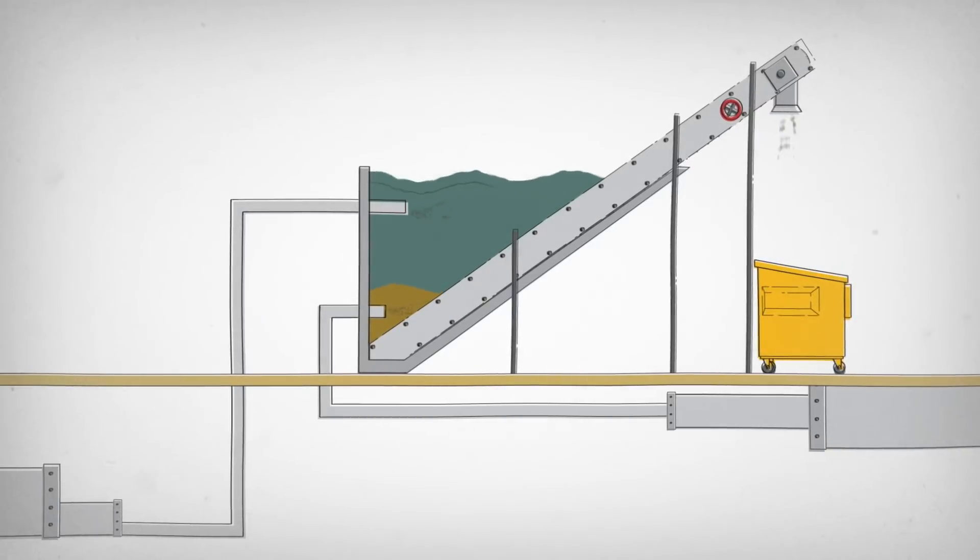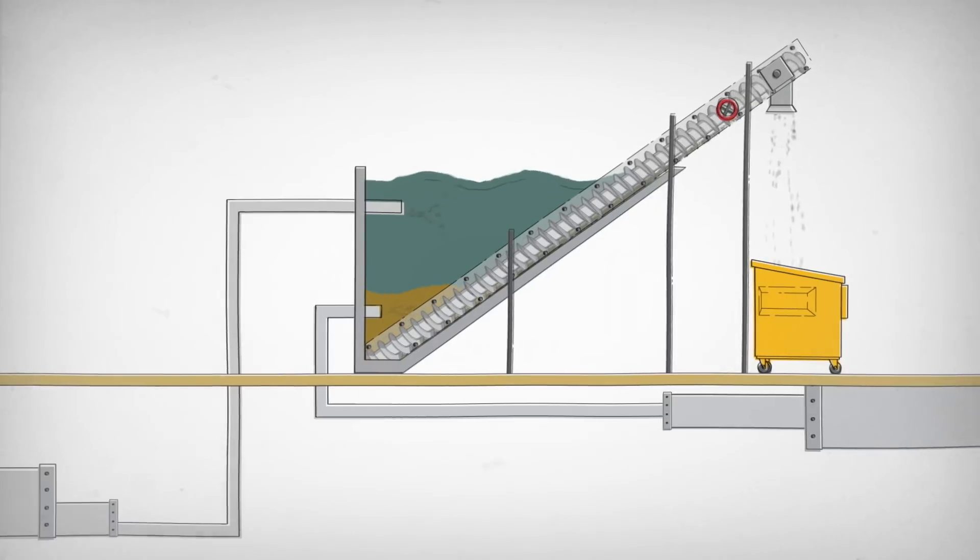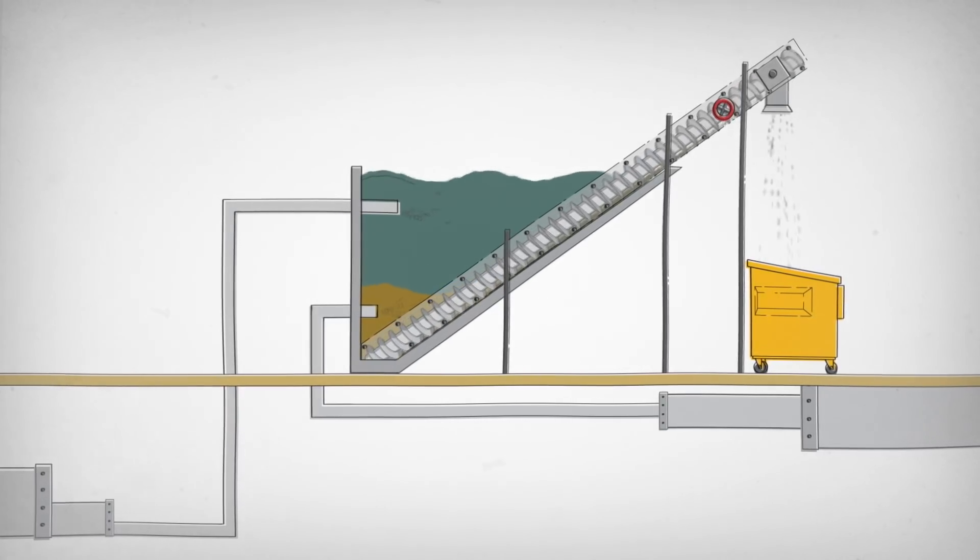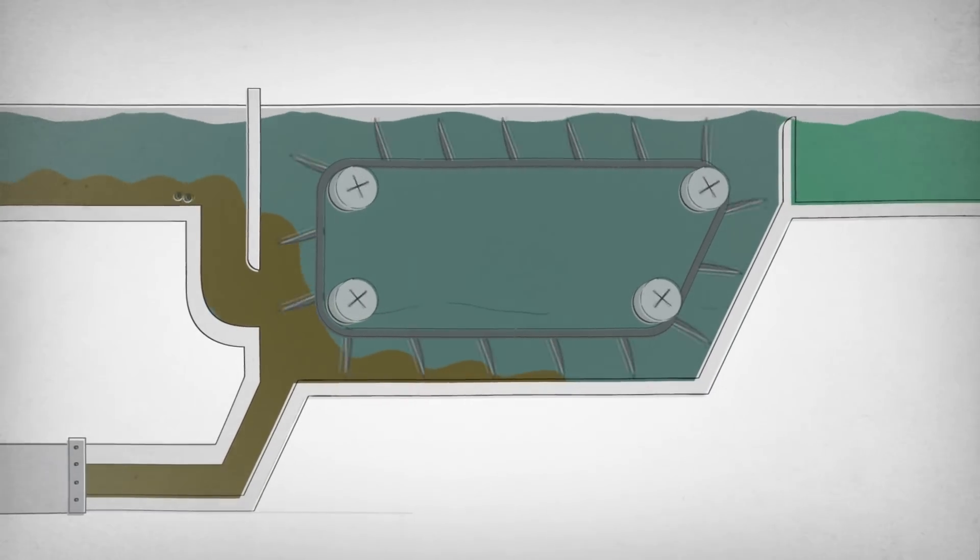Everything goes into these tanks where the dirty water is separated from that poopy solid that sinks to the bottom. This solid is mostly poop but includes leftover toilet paper too.